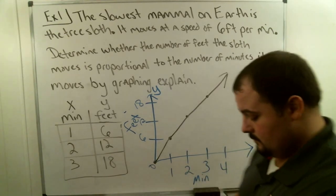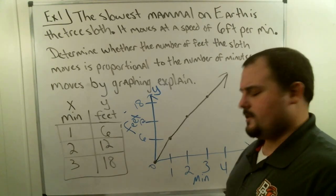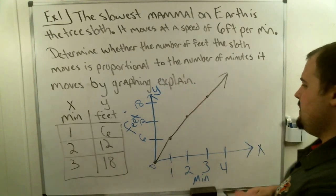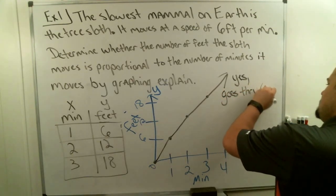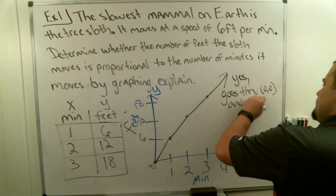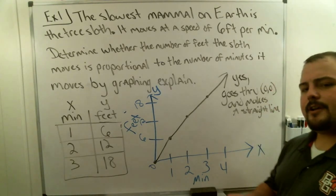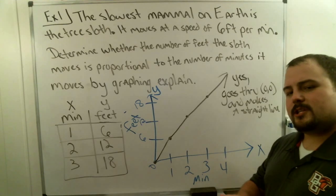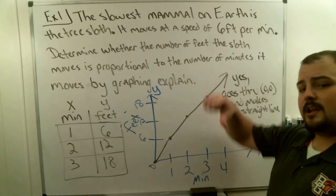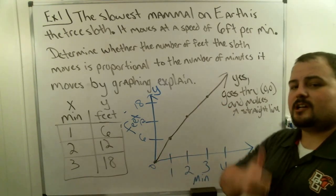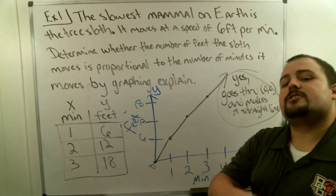Let's explain this answer. This graph is proportional because it goes through (0, 0) and makes a straight line. In order for a graph to be proportional, it has to do both of these things. If it only does one — goes through zero but doesn't make a straight line, or makes a straight line but doesn't go through zero — it's not proportional. It has to go through zero and make a straight line.